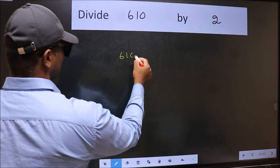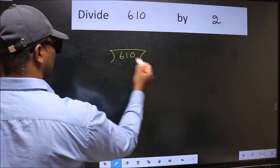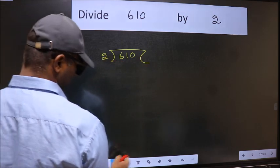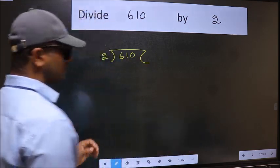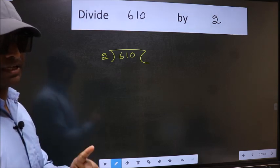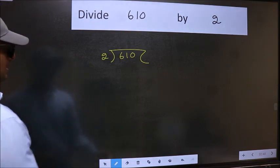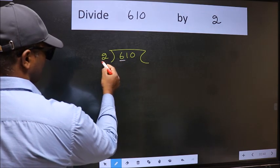610 and 2 here. This is your step 1. Next, here we have 6 and here 2.